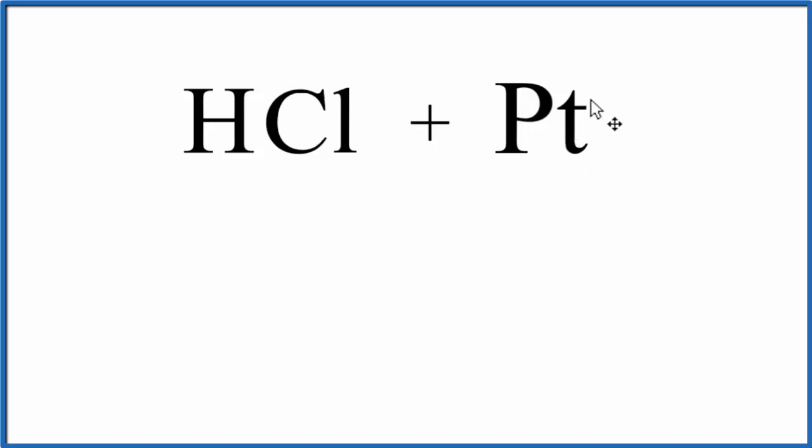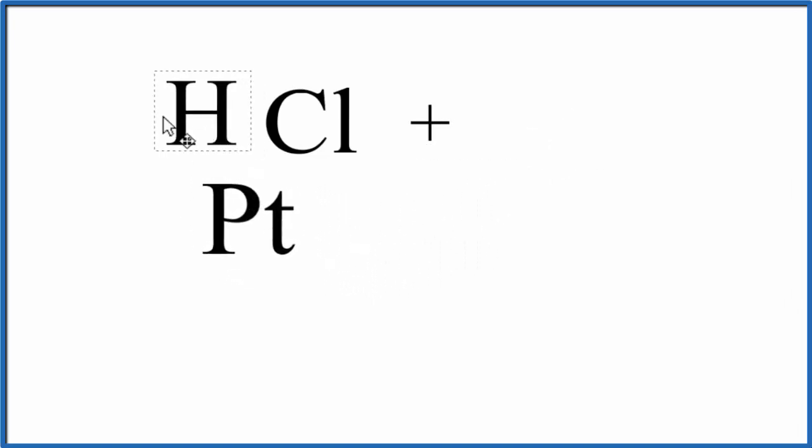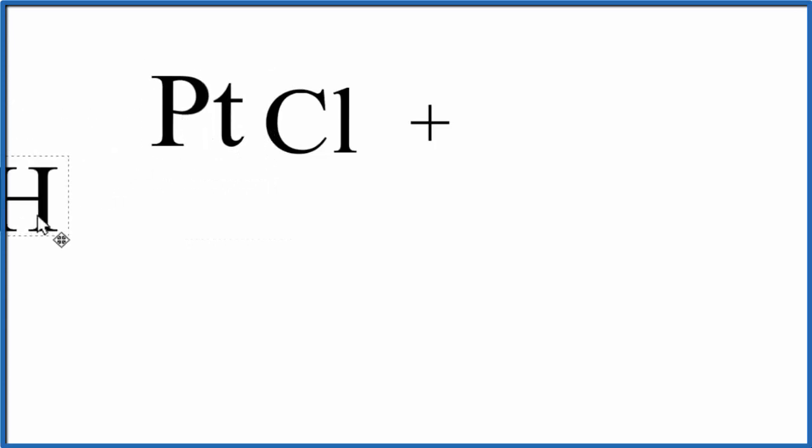You might think that platinum being a metal would form positive ions and it could come in here in a single displacement reaction and displace the hydrogen to form this PtCl.